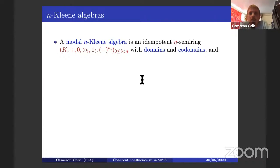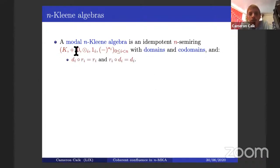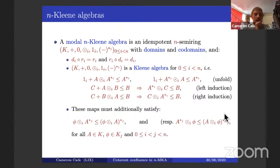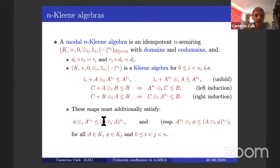Now we have domains and codomains, so the only thing left is the Kleene star. A modal and Kleene algebra will have an underlying idempotent n-semiring with domains and codomains, requiring a compatibility criterion between domains and codomains stating that domain algebras and codomain algebras line up. Furthermore, we want each star map to be the Kleene star for the corresponding multiplication — so for the i-multiplication, we get the Kleene star axioms for the i-star. We also need interaction between multiplications and stars of different dimensions: for i strictly less than j, we can absorb j-dimensional elements into the j-star.